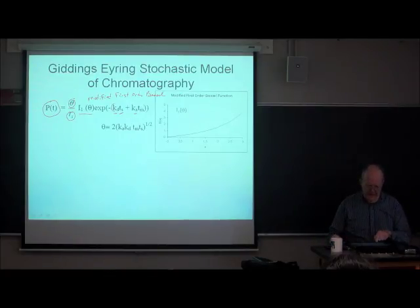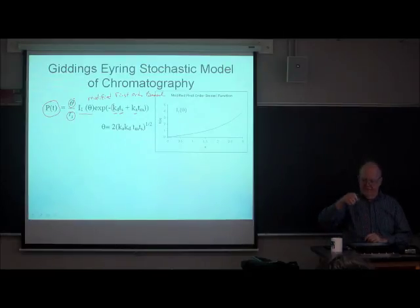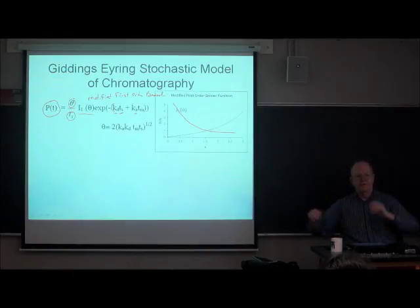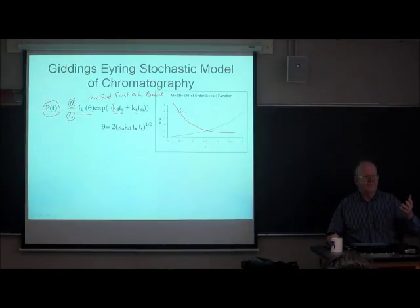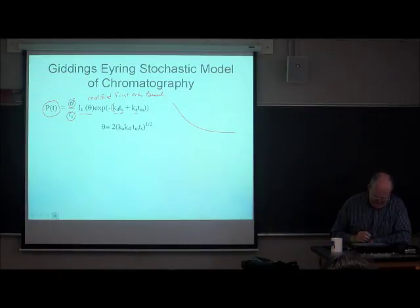Look at what we're multiplying it by: an exponential of minus a number, which comes down like that. What happens if you take the product of a function that goes up and a function that comes down? You get a peak. This is a peak — just not one that you can intuitively look at, because you have to look up I(theta).